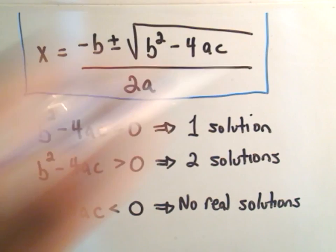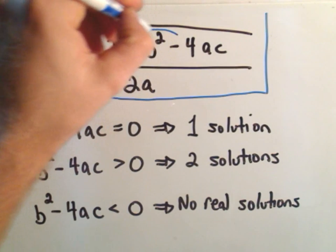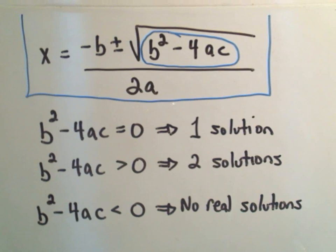x equals negative b plus or minus the square root of b squared minus 4ac over 2a. The stuff underneath the square root, the b squared minus 4ac stuff, that's what's called the discriminant.